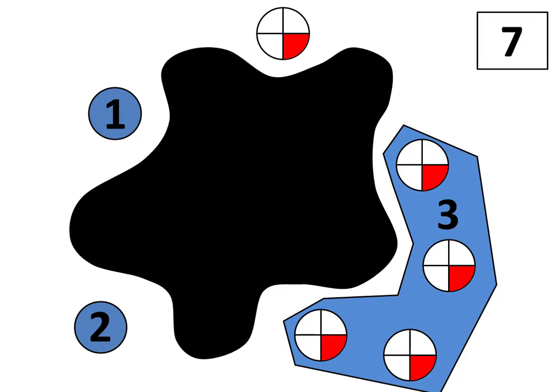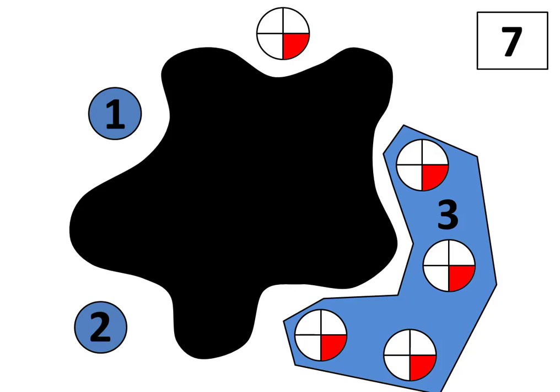One quick note about this strategy: another way to use it, instead of sliding the one-fourth inside the splat, is to extend the splat so it stretches around the one-fourth. That also tells me the total inside the splat is four for the moment, and then I can take the one-fourth out to find the answer.